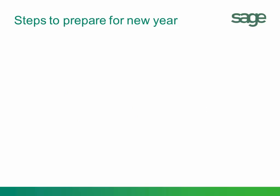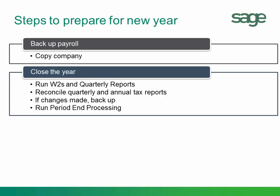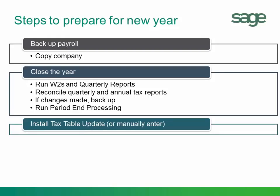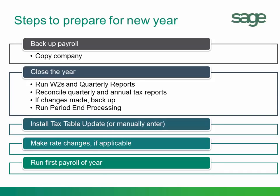Now you're ready to close the year and run your new payroll. Here are the steps: First, back up the payroll using your copy company functionality. Next, close the year — run your W-2s and quarterly reports, and reconcile your quarterly and annual tax reports. If you make any changes based on that reconciliation, back up the payroll again. Then run period end processing. After that, install your tax table update. Then make any rate changes — you may need to manually enter your local taxes, but you won't need to do anything at the state and federal level. Once those rate changes are made, you're ready to run the first payroll of the year.